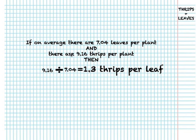Now, in order to calculate the average number of thrips per leaf, divide the average number of thrips — in this example 9.16 — by the average number of leaves per plant, in this case 7.04. In our example, we find that plants have an average of 1.3 thrips per leaf.